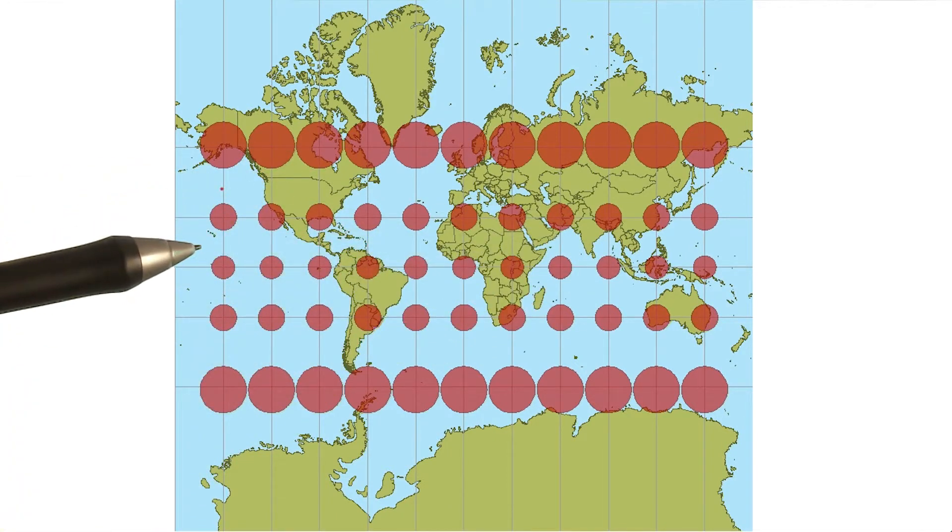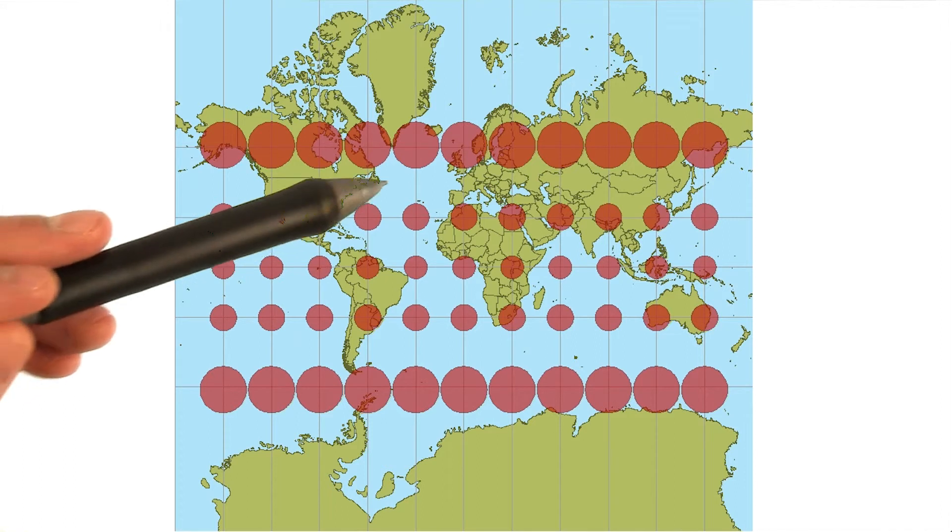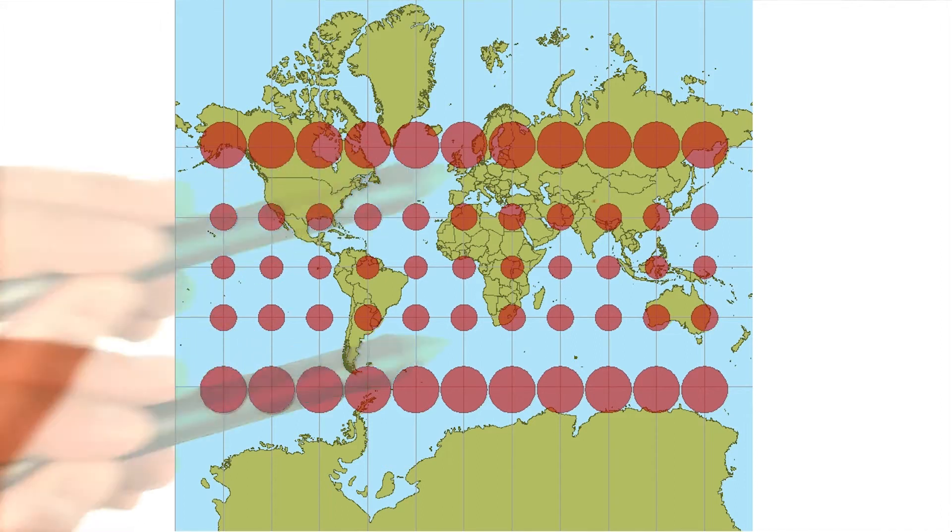One, because the participating countries in the World Cup are most frequently participating. And two, the locations near the center of the map are the ones where the World Cup's actually been held.